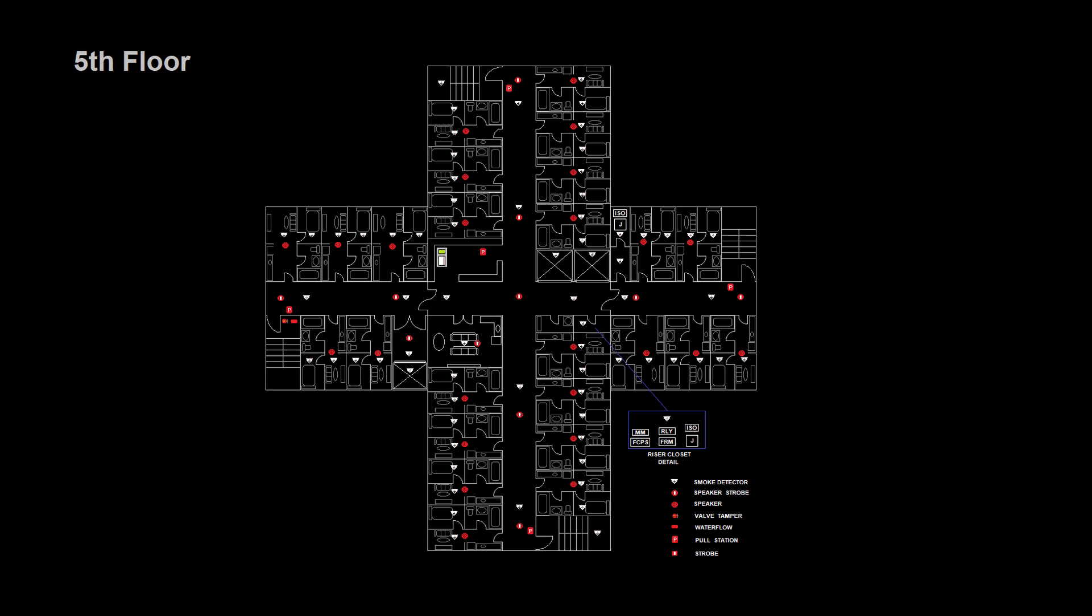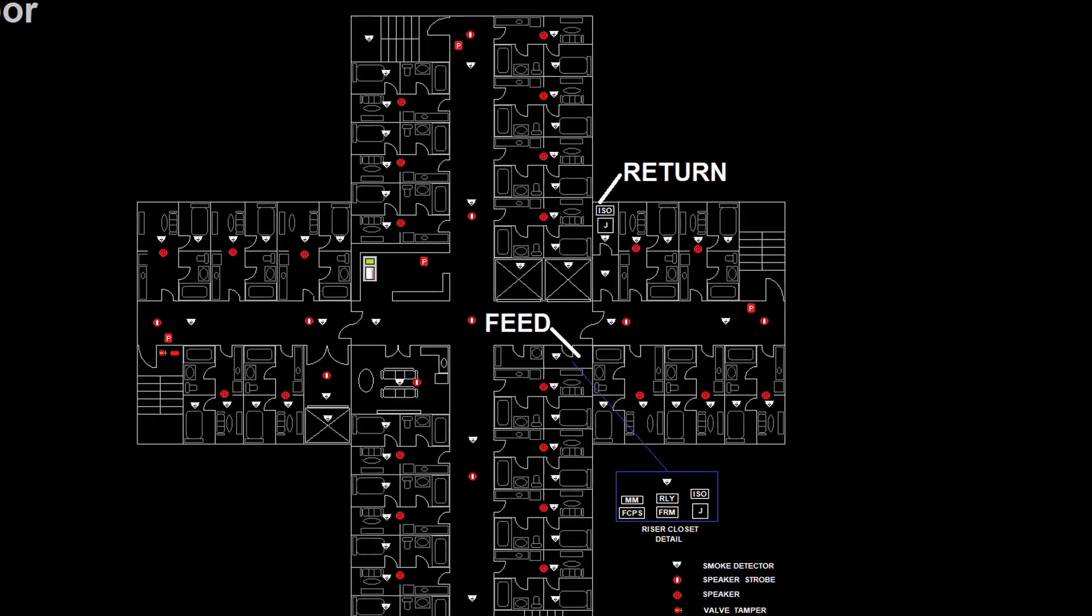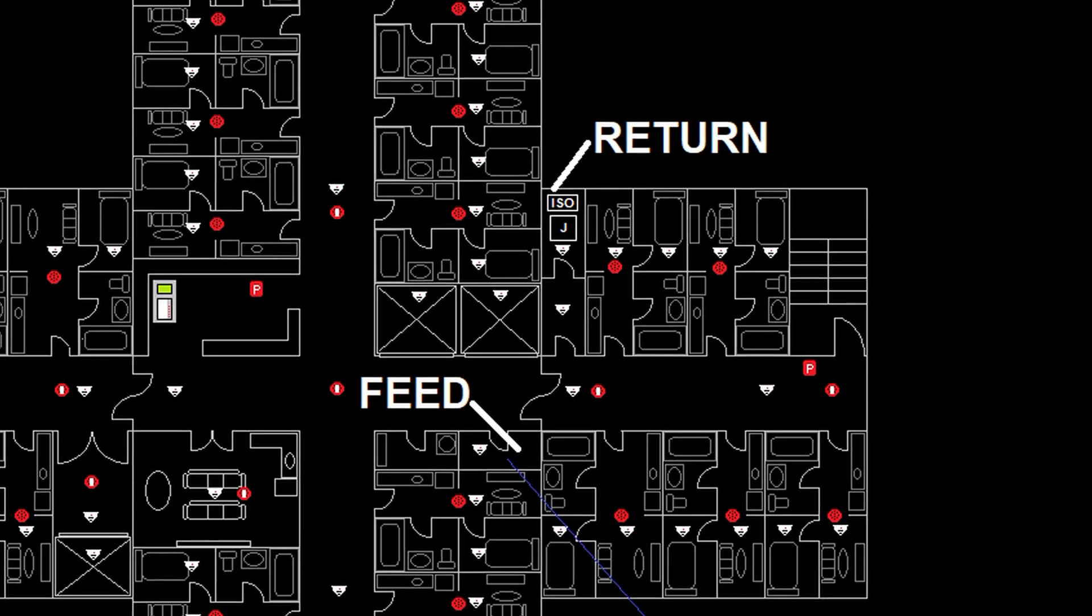To maintain proper Class A configuration, the feed and return pipes need to remain five feet apart, which in this case is no problem since our feed and return risers are in separate closets, as you can see here.